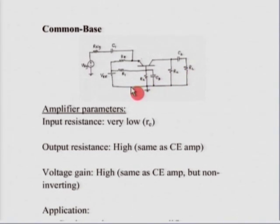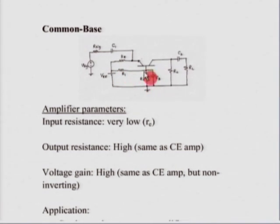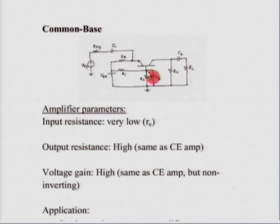There are two major differences compared to what we saw in a common emitter. The signal is now applied to the emitter — in a common base amplifier, the signal is applied between the emitter and ground. Since we are using a voltage divider network to bias and get a certain value of V_BE, we need to ensure that the base is at AC ground potential. This is done by connecting a fairly large capacitor from base to ground.